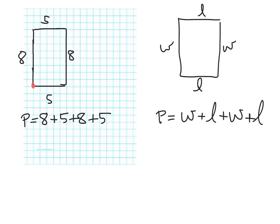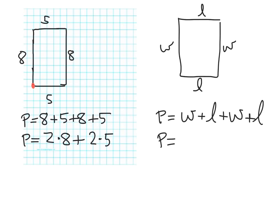Another way we could write it: we have two 8s and two 5s. So one way we could do it is 2 times 8 plus 2 times 5 — because we have two 8s and two 5s and we're adding them together. What would that look like in the general rectangle? Instead of two 8s, we have two Ws, so it's going to be 2 times W plus 2 times L.